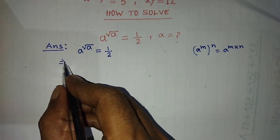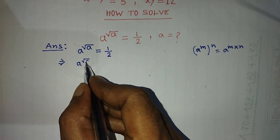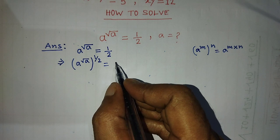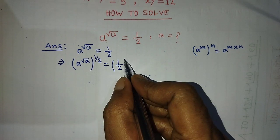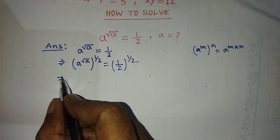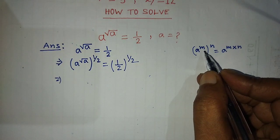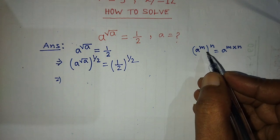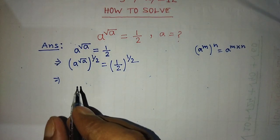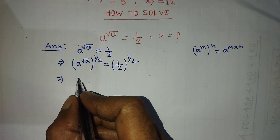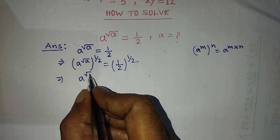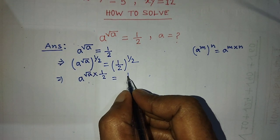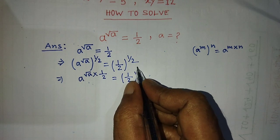So on the left hand side, we have to write a to the power root over of a, whole to the power 1 by 2, is equal to, on the right hand side, we have to take the power 1 by 2. We have to apply the formula: a to the power m whole to the power n is equal to a to the power m into n. So on the left hand side, we write a to the power root over of a into 1 over 2, is equal to 1 over 2 whole to the power half.